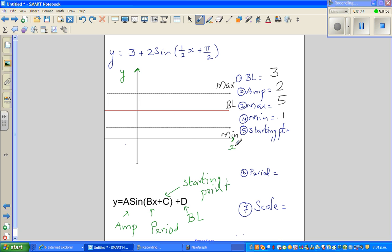This is your baseline, this is maximum, this is minimum. This is your x-axis and y-axis. The baseline is 3, so this is 3. The maximum is 5, so this is 5, not drawn to scale. This is 1 and this is 0.